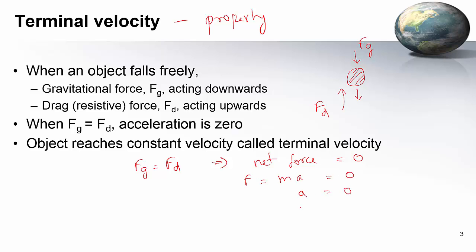A equals 0, that means the velocity is constant because acceleration is the rate of change of velocity. Therefore, this constant velocity when the object reaches the maximum constant velocity, that constant velocity is known as the terminal velocity.